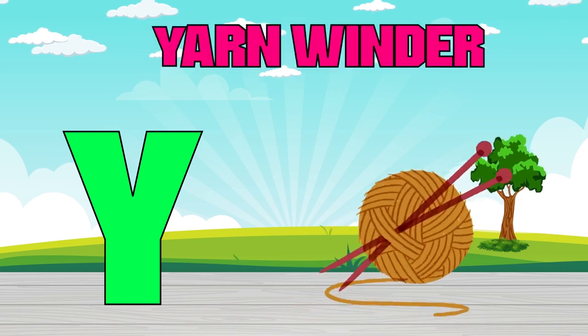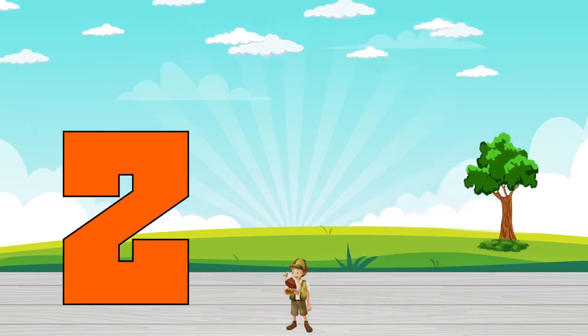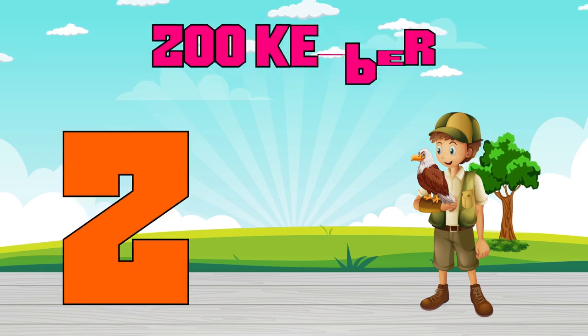Y is for yarn winder, y, y, yarn winder. Z is for zookeeper, z, z, zookeeper.